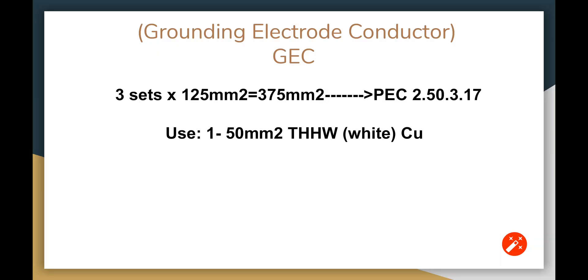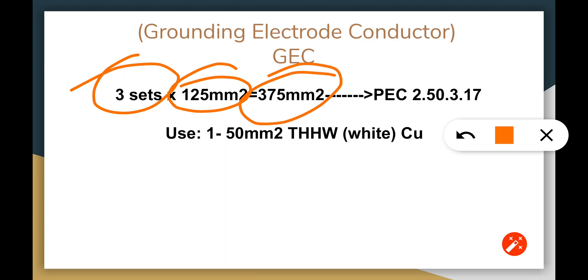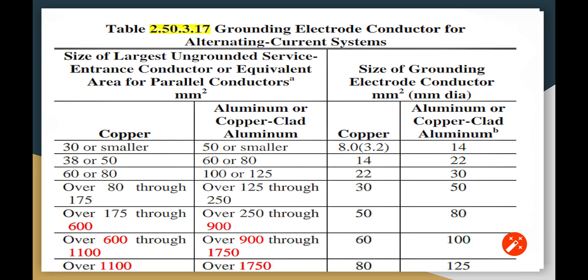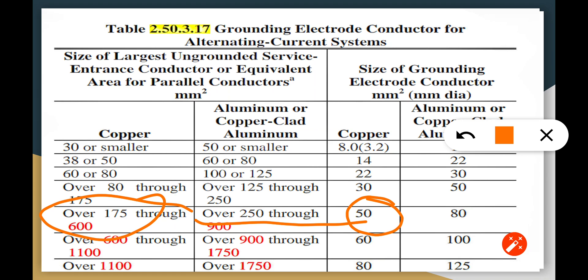The grounding electrode conductor is based on PEC 2.50.3.7. In three sets with three raceways, we have to multiply that by the 125 mm squared that we got earlier, and we shall get 375. So we're going to base this on PEC 2.50.3.17 and we shall get 50 mm squared. For 375, we get 50 mm squared, so we're at the minimum of 50 mm squared for our grounding in parallels.